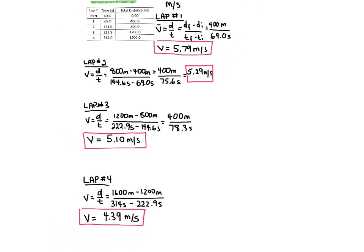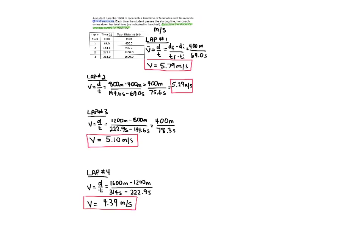And so if we look at all of our times here, here's our four times. We could see that she gradually slowed down. So it looks like she kind of ran out of gas near the end of the race and probably started off a little bit too quickly there with that 69 second first lap. You could see by the end she got much, much slower.